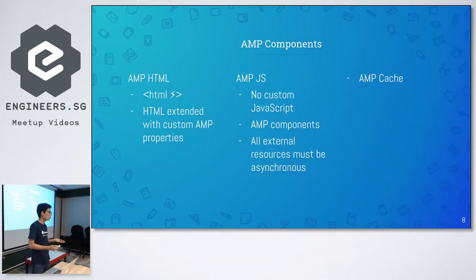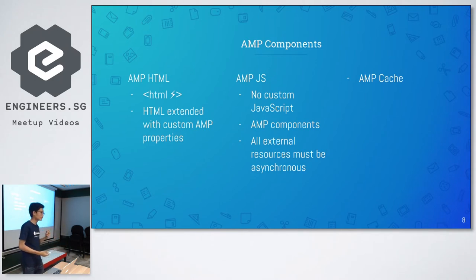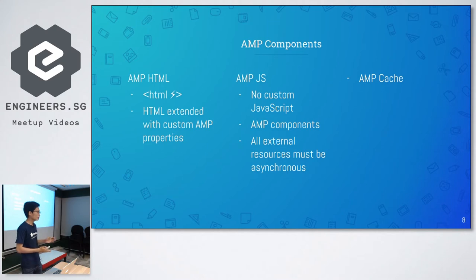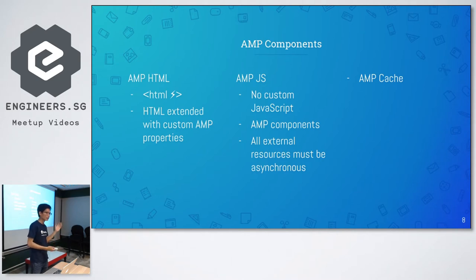How do you get this technology implemented on your website? This is done through three components. The first is AMP HTML, which is a special syntax you need to write to allow the page to be validated and enter the cache. The second is AMP JavaScript, which is like web components — you can't write your own JavaScript, but you can use pre-written JavaScript modules from the AMP project and apply them to your page. The third is AMP Cache, which I explained earlier.